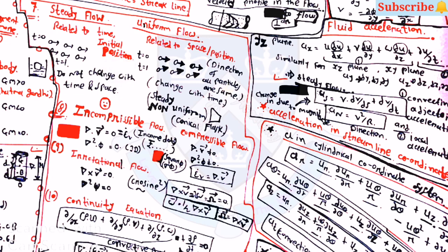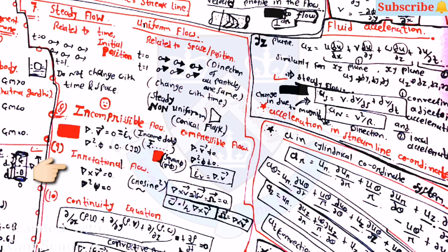For incompressible flow, two equations must be satisfied: del-dot-v-bar equals zero, and del-squared into phi equals zero. For irrotational flow, del-cross-v-bar equals zero, and del-squared-psi equals zero. These four equations are asked very frequently in the examination from this chapter.